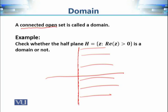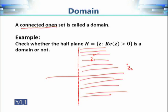We can easily see that H is connected because any two points can be joined by a curve completely contained in this region. It is also open because the boundary is not included — for every point we can find an epsilon-neighborhood completely contained in the set. So the half-plane H is an example of a domain.